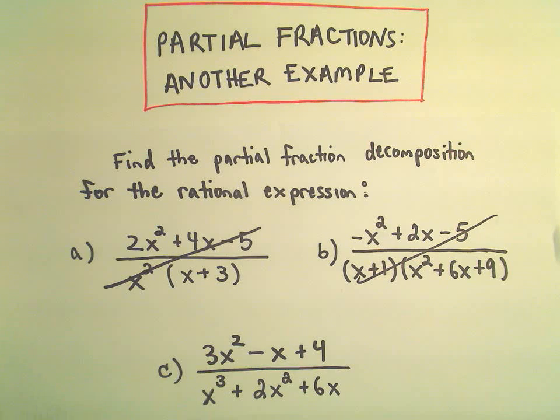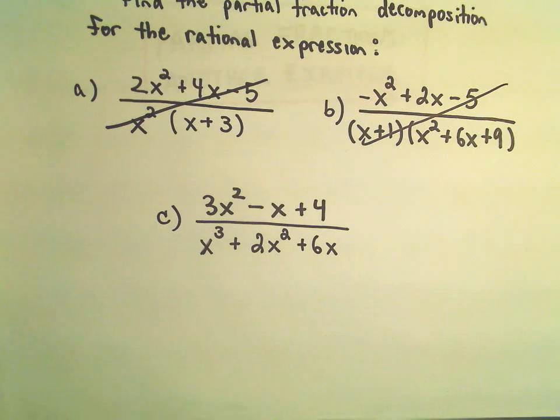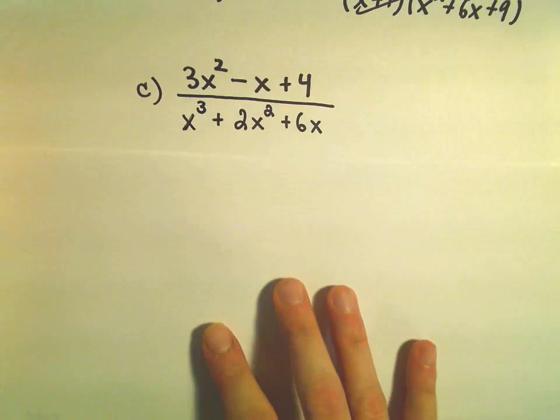Okay, so one more example here of finding a partial fraction decomposition. And in this case, I'm going to do 3x² - x + 4 over x³ + 2x² + 6x.